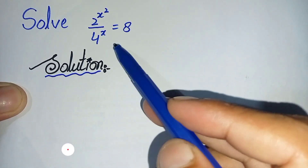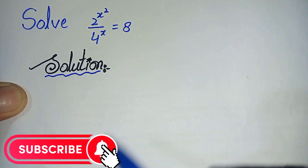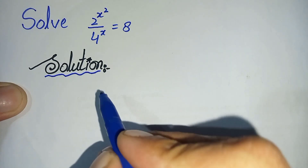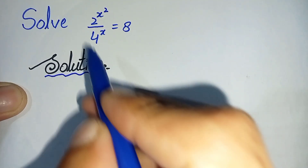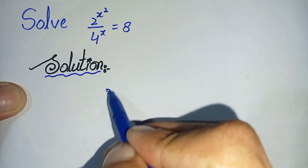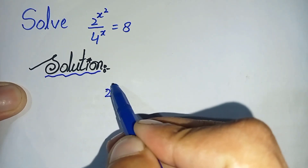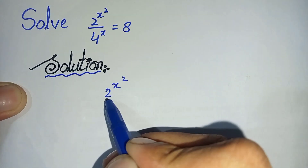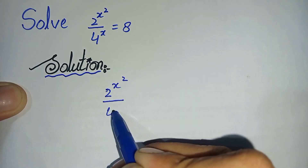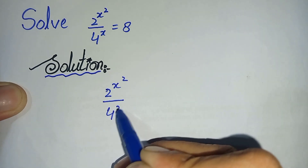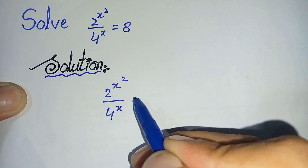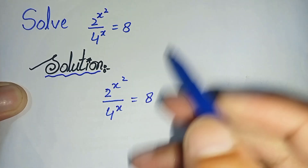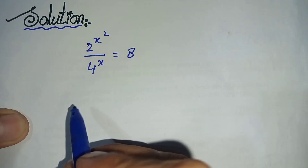First of all we will rewrite this question in solution form and then we will try to solve it. So the question is: 2 raised to power x squared divided by 2 raised to power x is equal to 8.